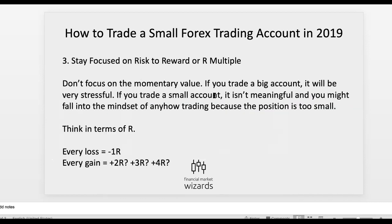The last point I want to focus on is staying focused on risk-to-reward, or what is known as the R multiple. Risk-to-reward means how much are you risking in order to make a certain amount? For example, if I'm risking $1 and my potential reward is $3, that means I have a risk-reward of 1:3 — every dollar I risk, I stand to make $3. The R multiple works the same way: if you are risking 50 pips in a trade, then 50 pips is 1R. If you close that trade with a profit of 150 pips, that is a reward of 3R — you just take 150 divided by 50, which equals three.